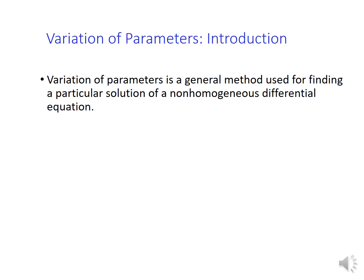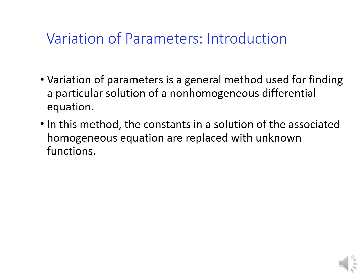We start with the introduction. Variation of parameters is a method to find a particular solution of a nonhomogeneous differential equation. I recall here the method of undetermined coefficients that we used for the same purpose. In this method, we first find the complementary solution to the system, which is the linear combination of fundamental set of solutions. And in here, we replace the constants with some unknown functions. And our goal is to determine those unknown functions. I'm going to explain how it works in a minute.